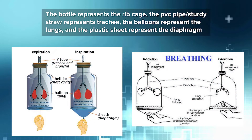What does each part of our lung model represent? The bottle represents the ribcage. The PVC pipe or the sturdy straw represents your trachea. The balloons represent the lungs. And the larger balloon or plastic sheet at the bottom represents the diaphragm.